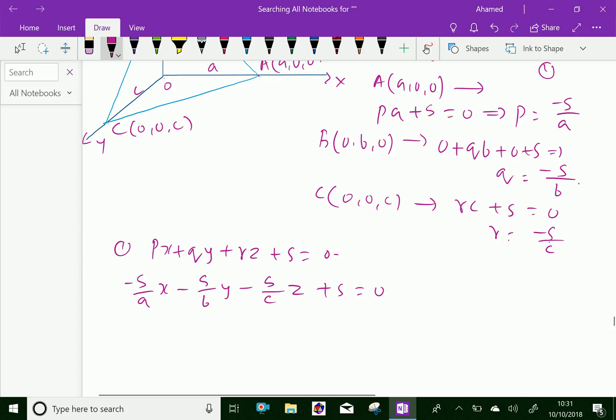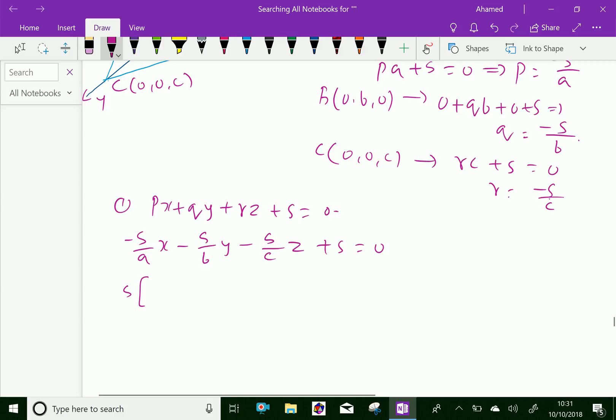Now, take out S common and it gives minus S times X by A plus Y by B plus Z by C minus 1 equals 0. Therefore, we have the equation X by A plus Y by B plus Z by C equals 1, which is the required equation of the plane in intercept form.